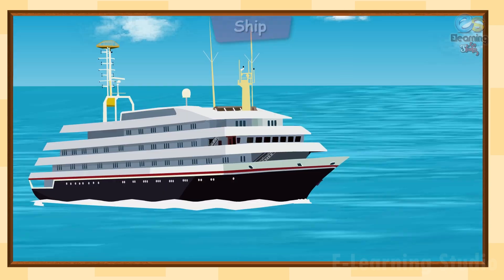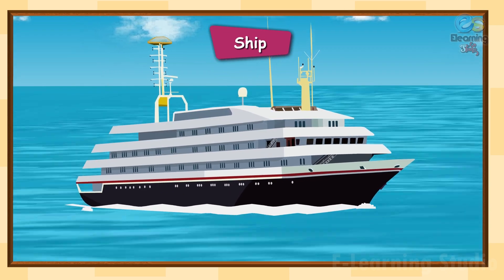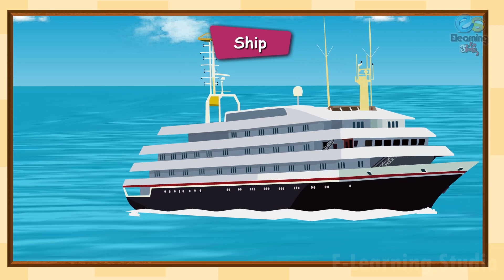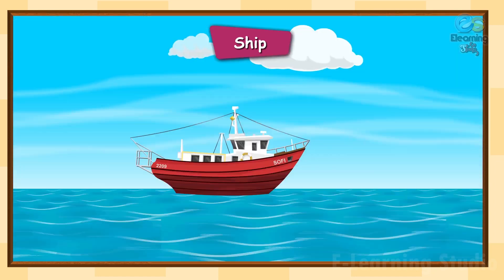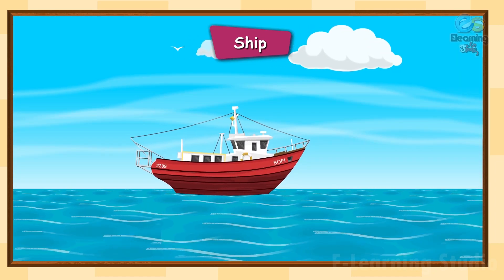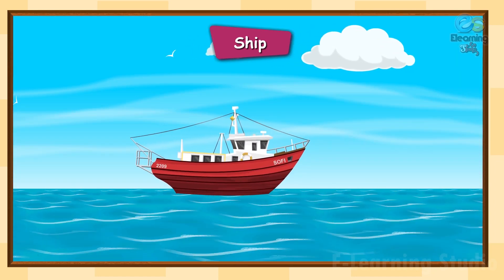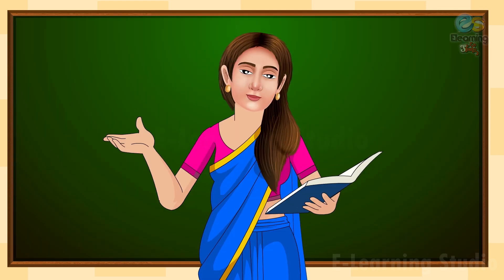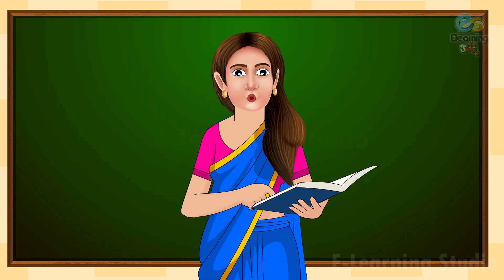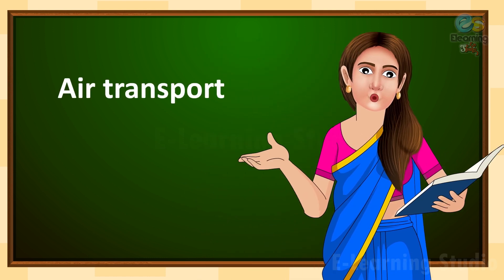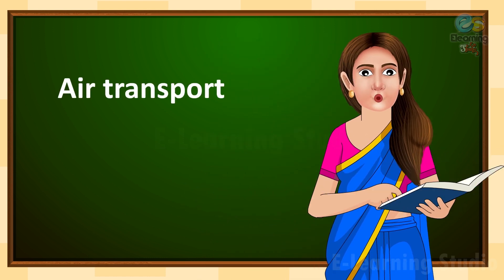Ship: a ship is a large vehicle used to transport goods and people over water. It can cross huge seas and oceans. In air: the mode of transport that moves through the air is called air transport. We can travel from one continent to another via aeroplanes.